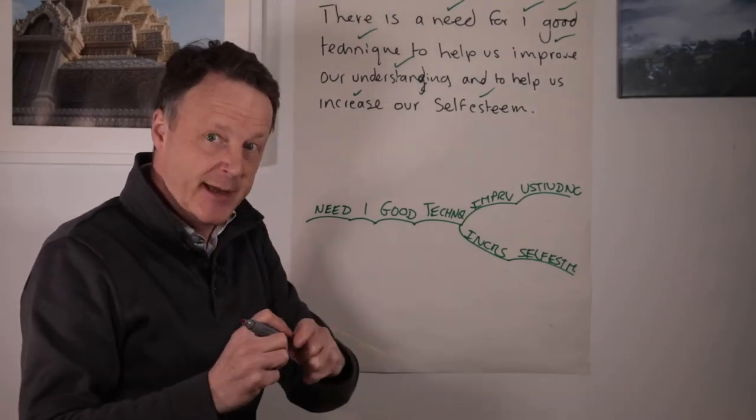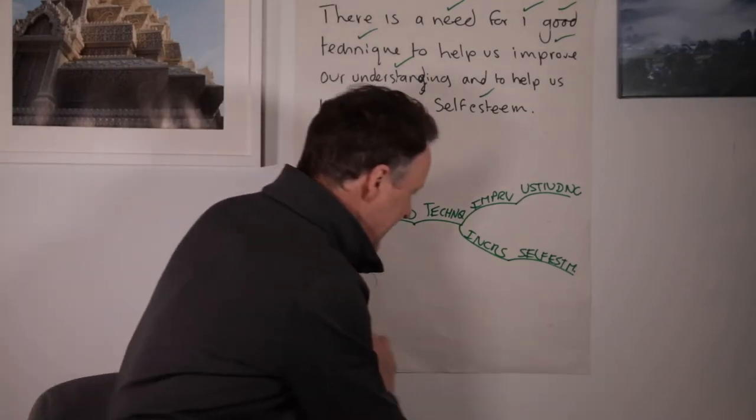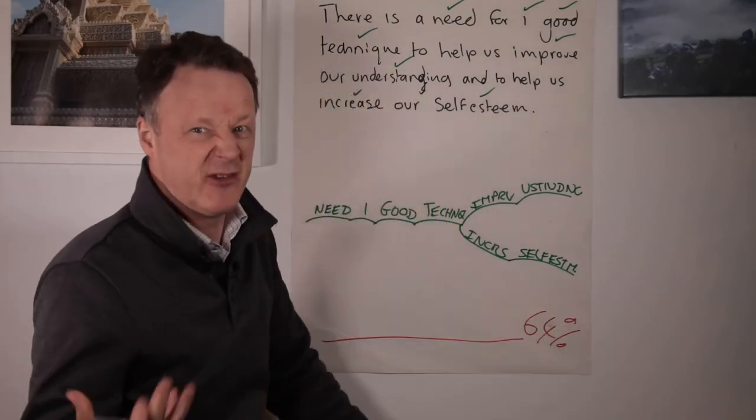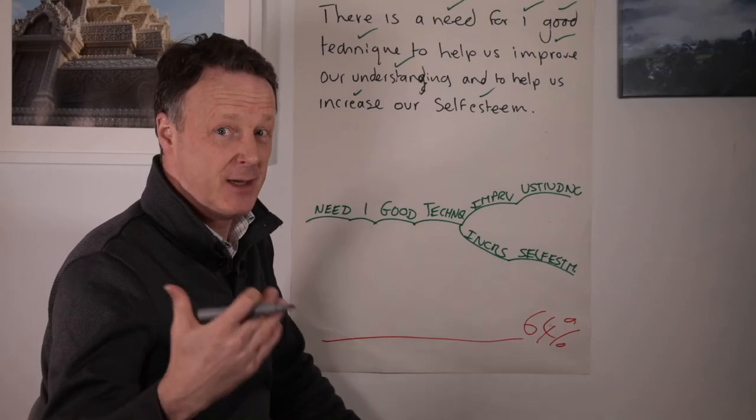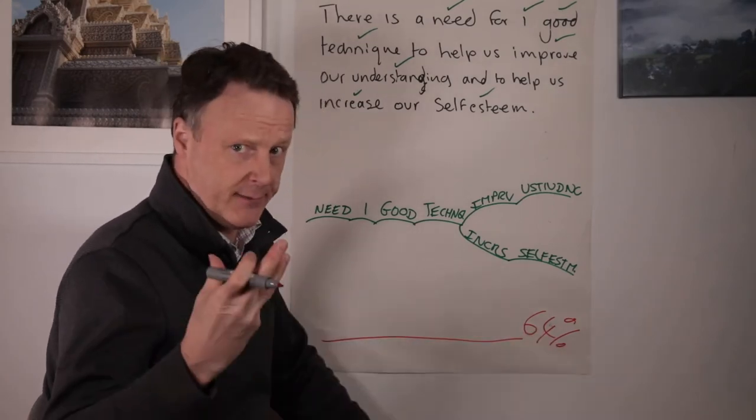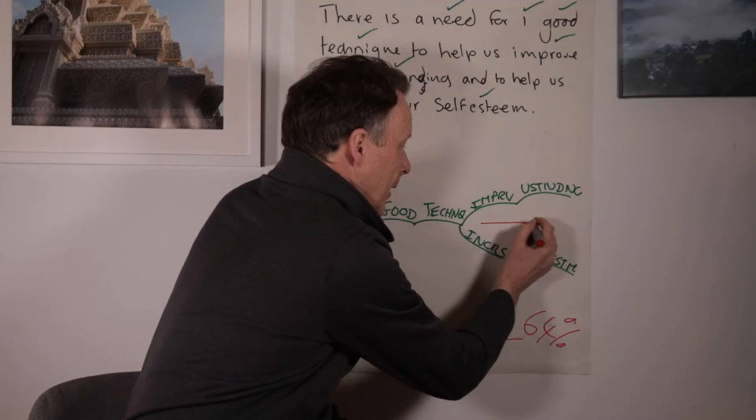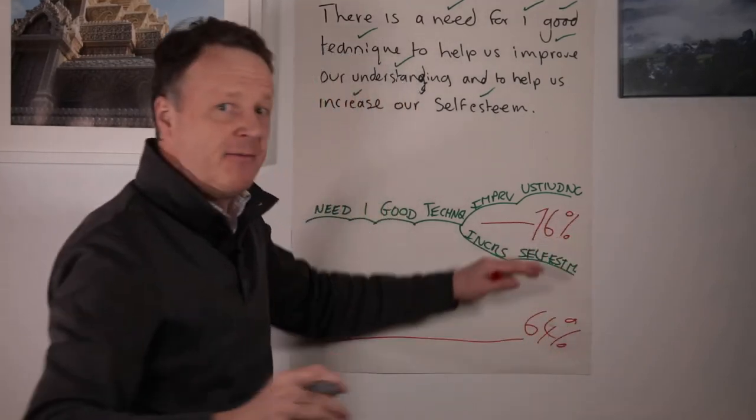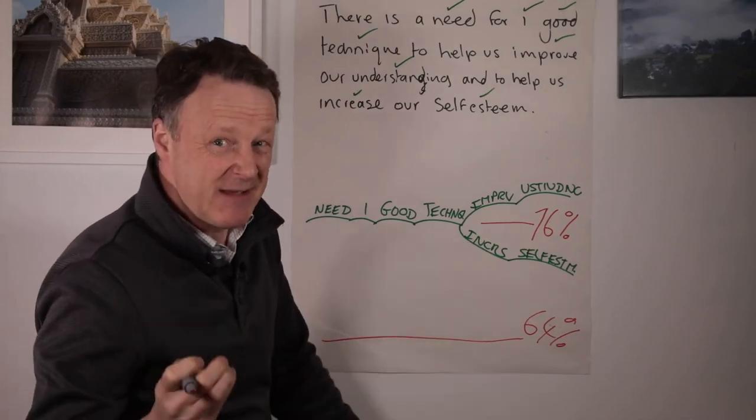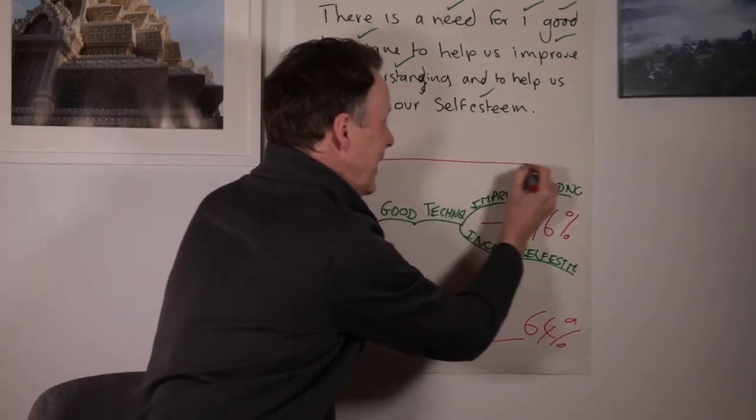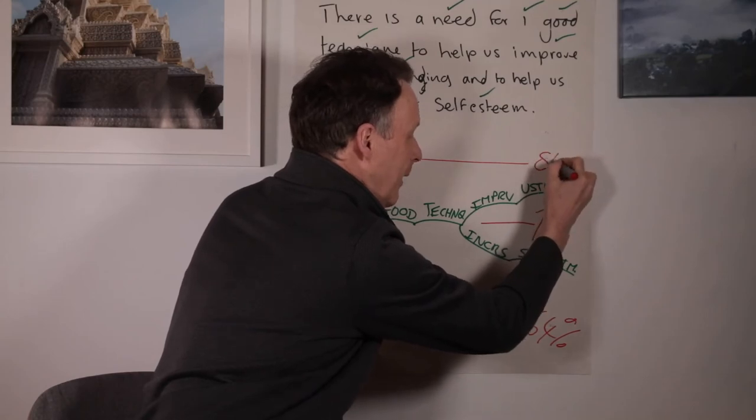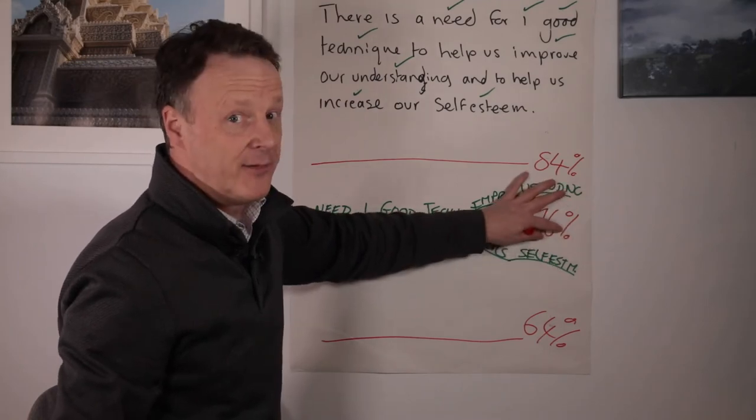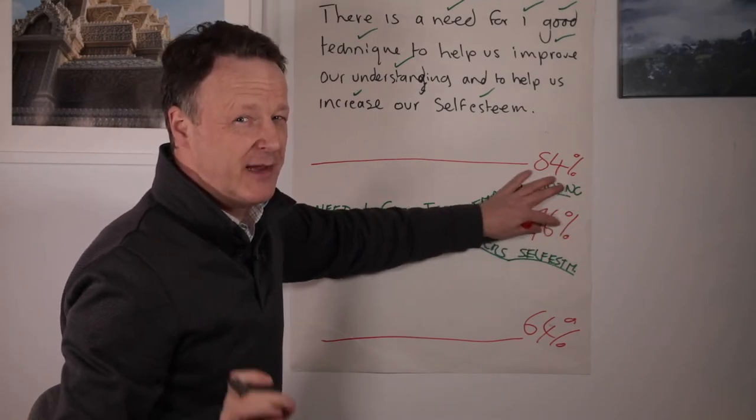And it's been tested by cognitive neuroscientists. So what they found was that average understanding in a complex presentation is about 64%. This is for people who are good at taking notes. By using next generation note taking, average understanding after just two weeks goes up to 76%. And after a year, it goes up to a whopping 84%. And that's for dyslexics and non-dyslexics.